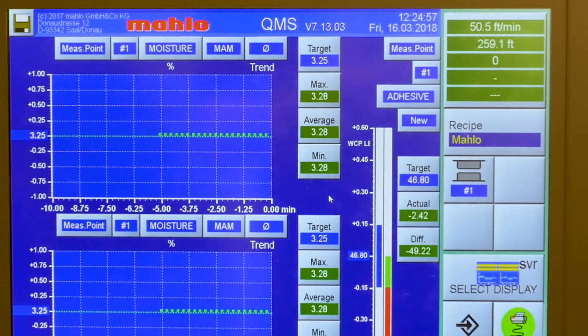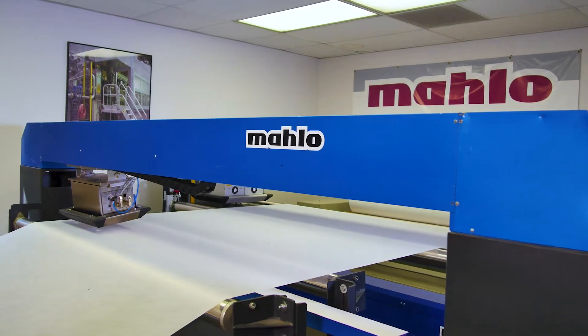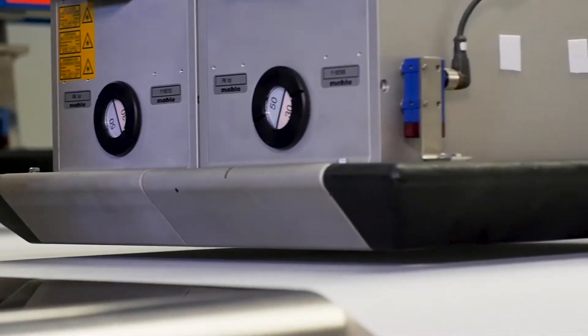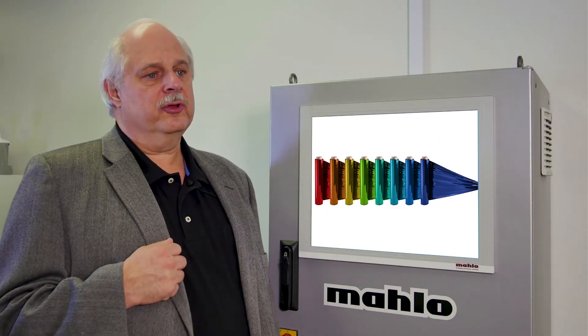Products our customers manufacture require accurate web gauging and control. In today's marketplace, consistency and efficiency are essential to gain market share and maintain margins. These are products such as non-wovens, extruded film and sheet.